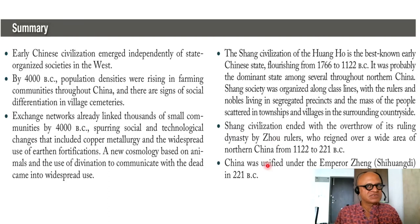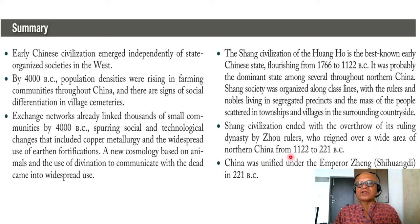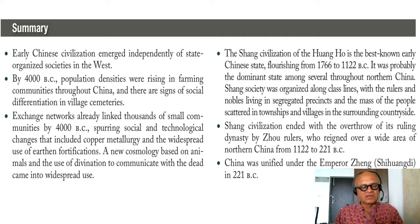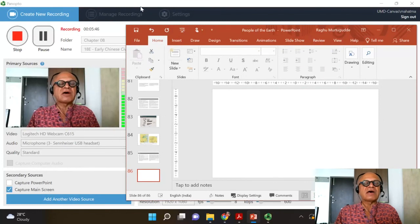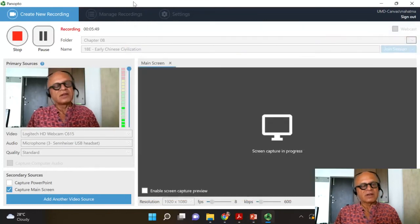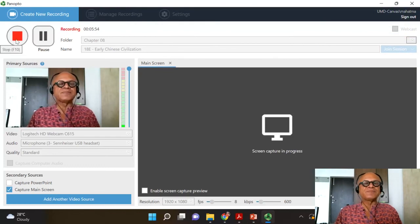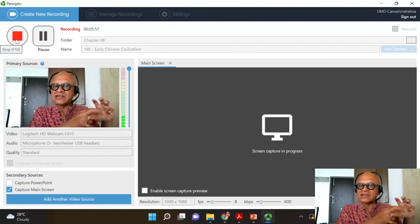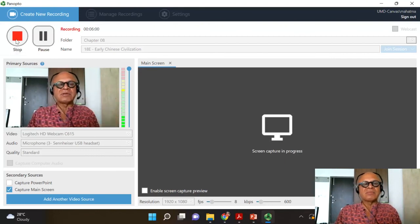Ming, Zhang, and so on. The Zhou rulers reigned over a wide area of northern China from 1112 to 221 BC. China was unified under Emperor Zheng — that's another surname still around — Xihuangdi, in 221 BC. Of course there is the history of Tibet and the battles between China and Tibet, which are interesting, but we just want to connect back to civilizations in the Holocene and then go back and try to connect back to climate as well.